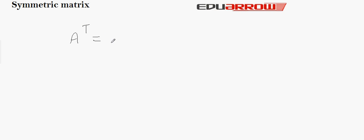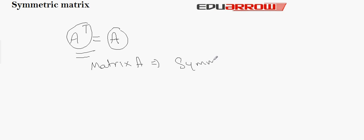First we will see what is a symmetric matrix. A square matrix A is called a symmetric matrix if the transpose of A, that is A-transpose, is equivalent to A. If a matrix A satisfies this condition then it is known as a symmetric matrix, and it should be a square matrix — that is, the rows and columns must be the same. If the order of A is 2 by 2, then the order of transpose of A should also be 2 by 2 by the definition of transpose.